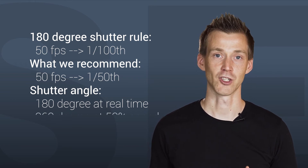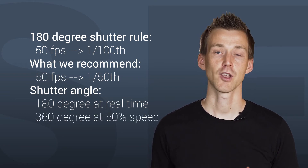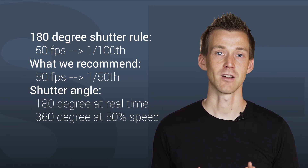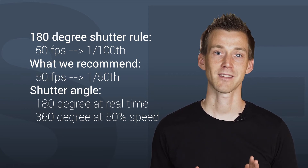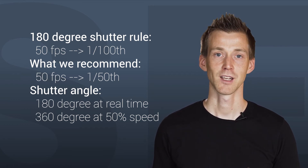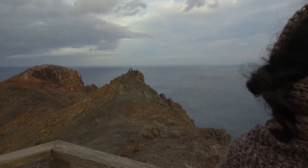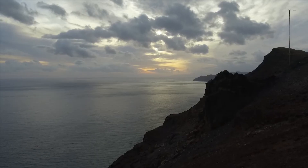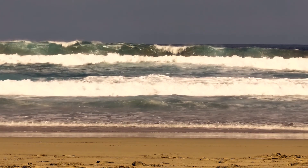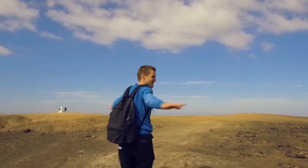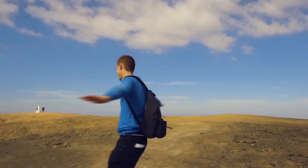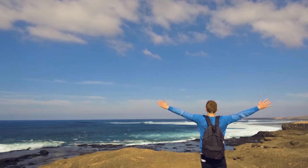When you slow the footage down to 50%, you are using every frame and your effective shutter angle is 360 degrees. But two things: first, your footage isn't supposed to look 100% natural anyway because it is slow motion. Second, a 1/50 shutter is in almost every case not too much motion blur to still look good. When you shoot extreme fast movements like action sports, you should increase your shutter speed a little bit of course.